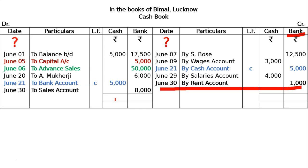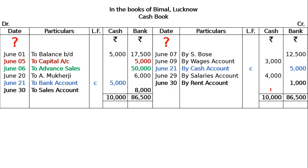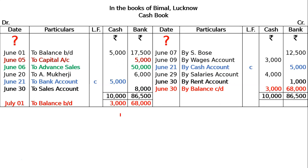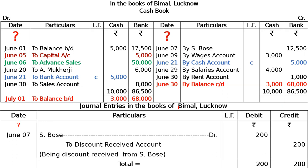To complete the cash book: the credit side totals are calculated — ₹10,000 minus ₹7,000 minus ₹3,000 gives ₹86,500 and ₹18,500. On June 30th, enter 'by balance carried down' for the difference on the credit side, then bring it to July 1st as 'to balance brought down.' Also note the journal entries in the books of Bimal Aflakhno — Asbos to discount received ₹200 for discount received from Asbos while giving a cheque.